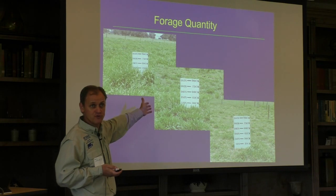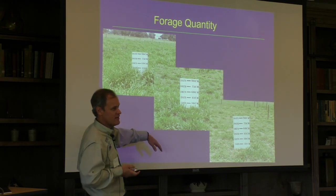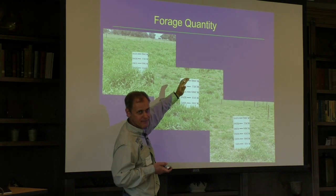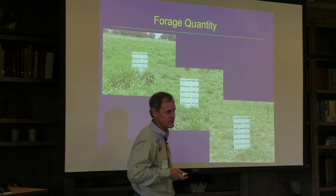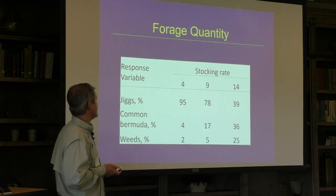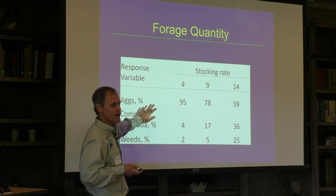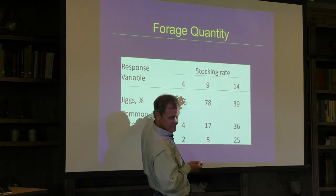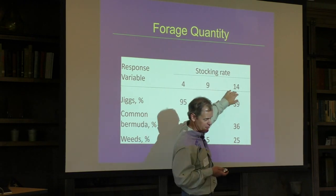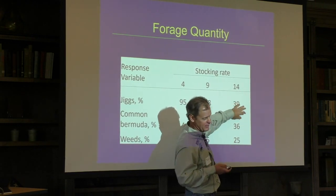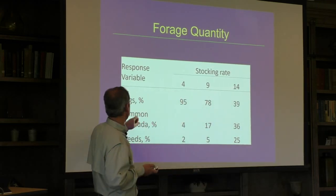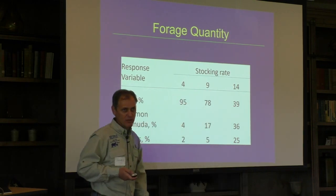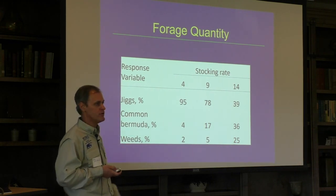Real data from a Brachiaria brizantha mulata trial confirms this: increasing stocking rate decreases gain per animal and follows the same curve. These photos show understocked versus overstocked pastures. In a separate study tracking pasture composition over two years, overgrazed plots lost a significant proportion of the desirable grass stand — we lost a lot of our forage because we overgrazed those pastures for two years.